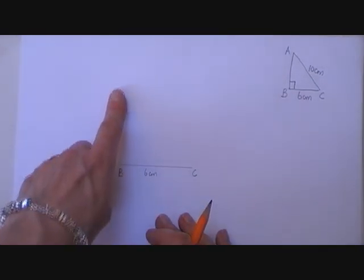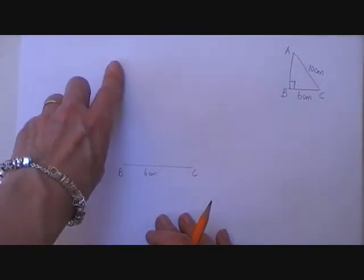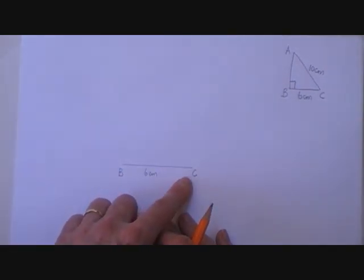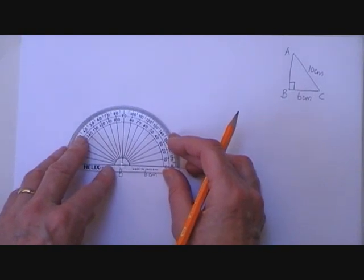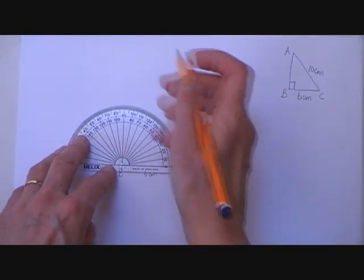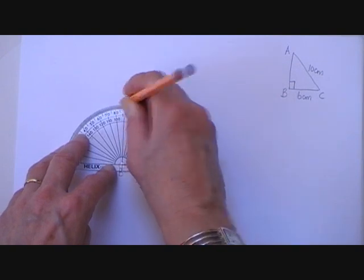From B I'm going to draw a line that's at right angles to BC. I can do that with a set square or I can use my protractor and measure out the 90 degrees. So put a dot for the 90 degrees.